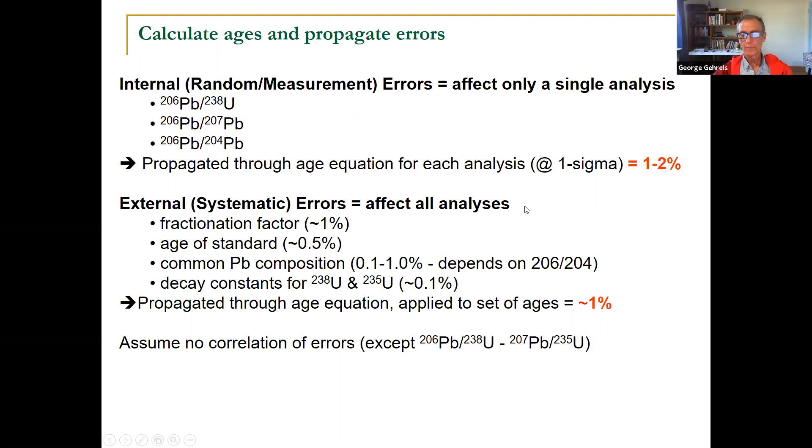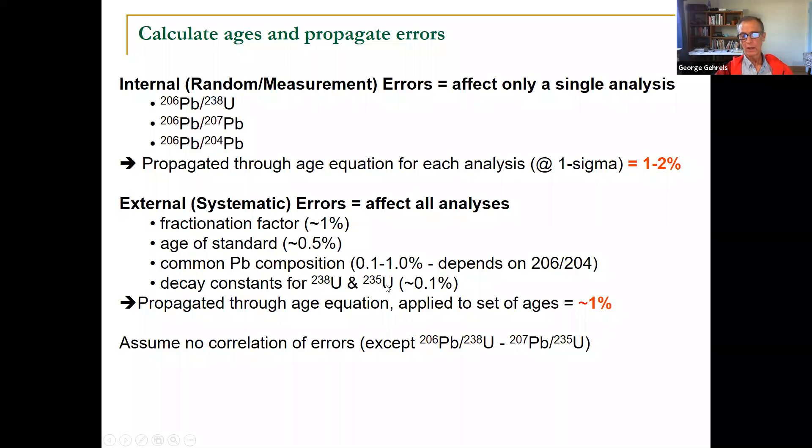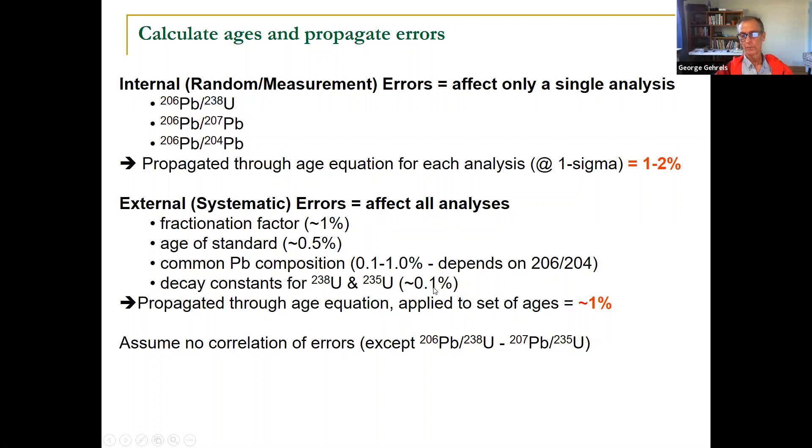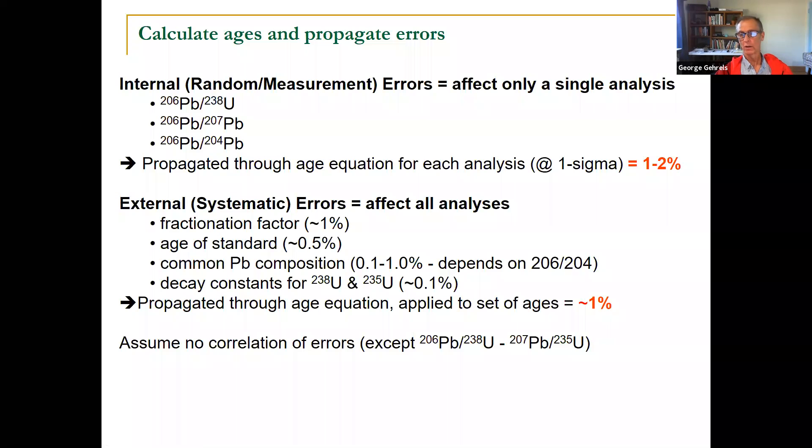Then there are other uncertainties that come into each analysis. And these would change the whole data set. So the easiest one to imagine for that is the decay constant. What if our decay constant is a tenth of a percent off? Well, then every age that you calculate is going to be that same tenth of a percent off, right? That's we call that a systematic error or an external error. Blanket on all of your analyses. They all go up and down together. Whereas the internal or random, those uncertainties are independent for each analysis.